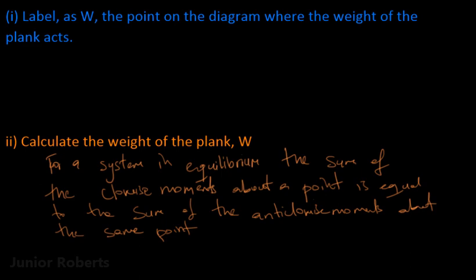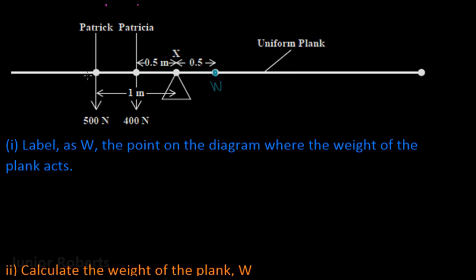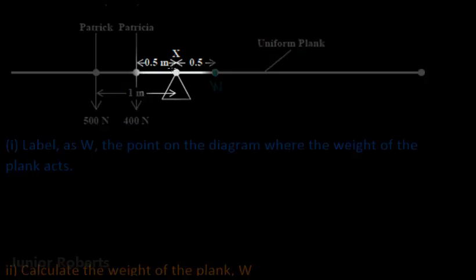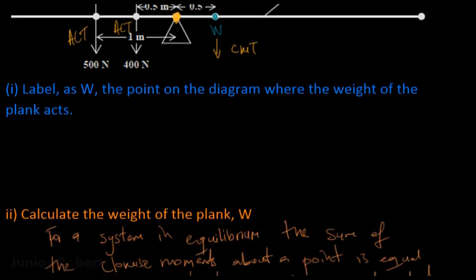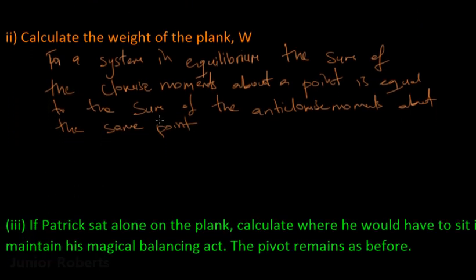Looking at our diagram, the weight of the plank acts downward and causes a clockwise turning effect. The weight of Patrick acts downward and causes an anti-clockwise turning effect. Likewise, Patricia's weight acts downward on the same side and also causes an anti-clockwise turning effect. So we have two anti-clockwise turning effects and one clockwise turning effect, all taken about the pivot point.